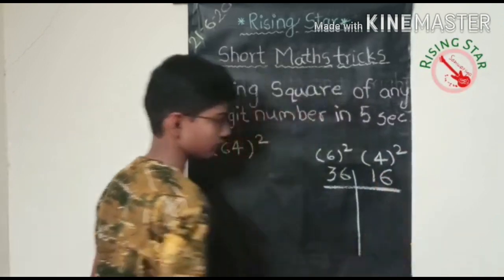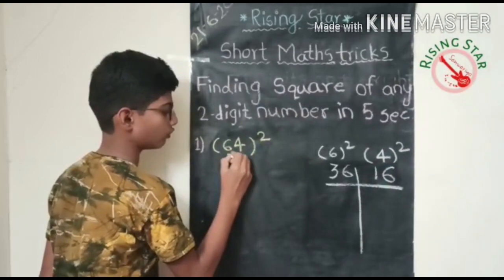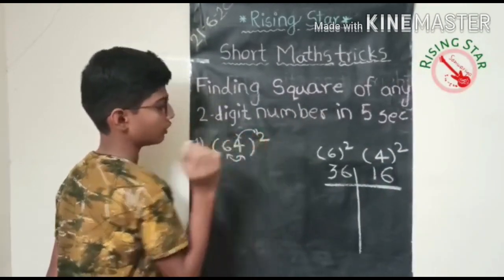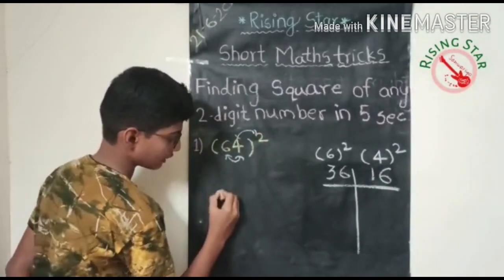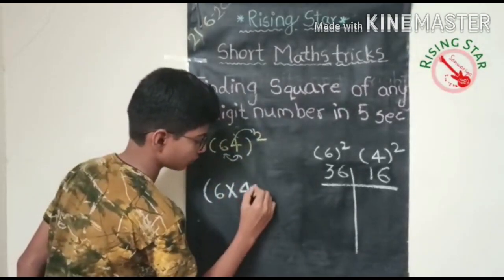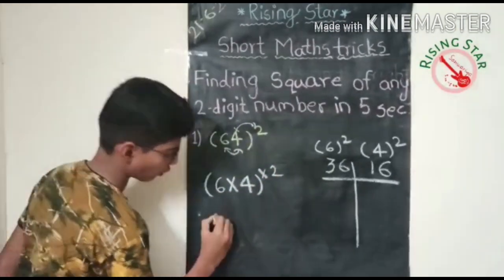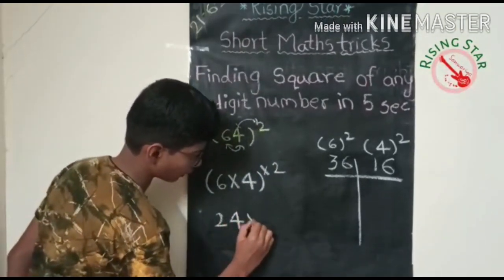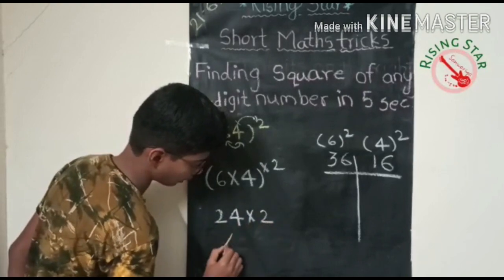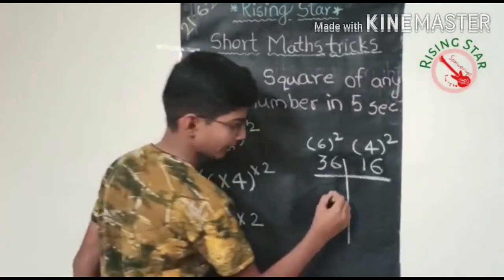And now multiply this six into four into two. You have to remember this. See, I will write six into four. Six fours are twenty-four. Twenty-four into two is forty-eight. So write forty-eight here like this.